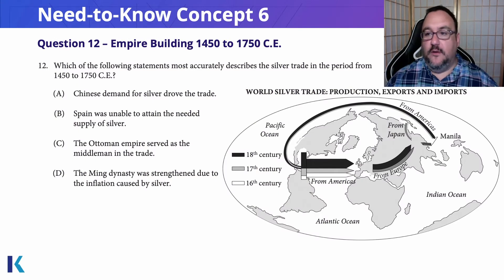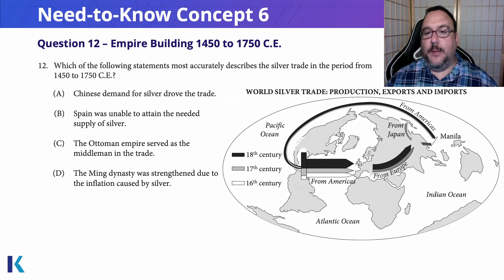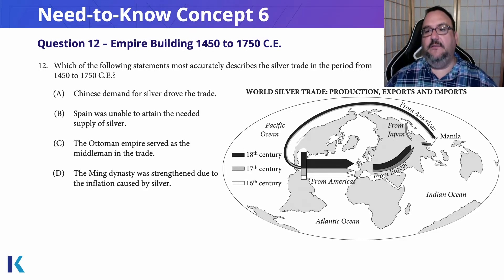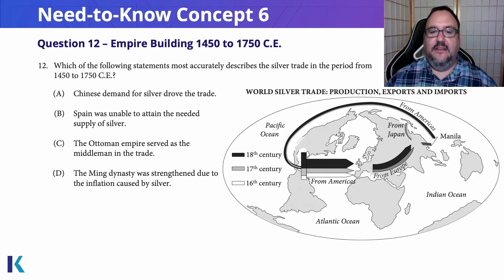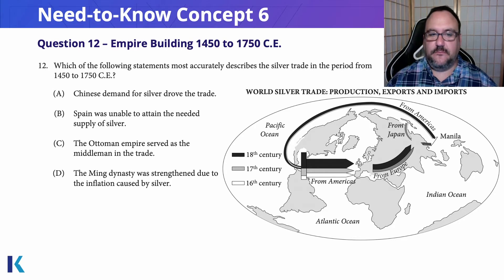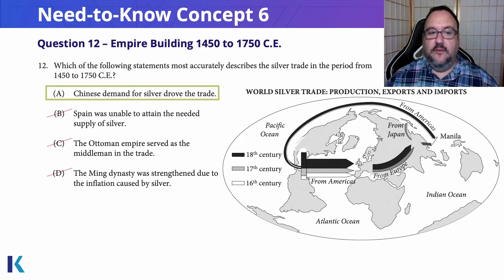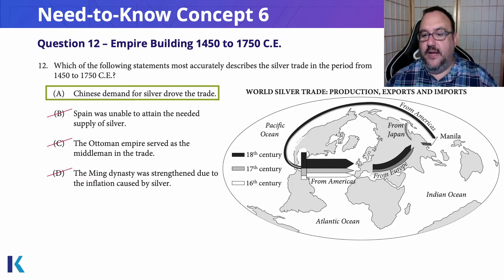Let's look at question 12, another test-like question: which of the following statements most accurately describes the silver trade in the period from 1450 to 1750? Take a minute, look at that map, and see which answer you will choose. Our answer is going to be: Chinese demand for silver drove the trade.